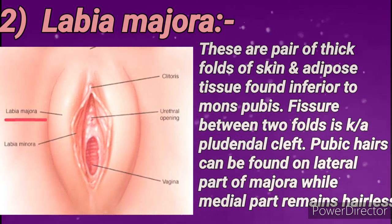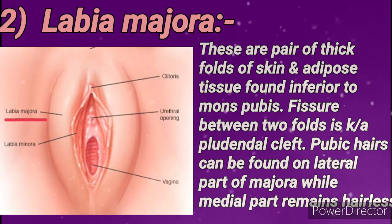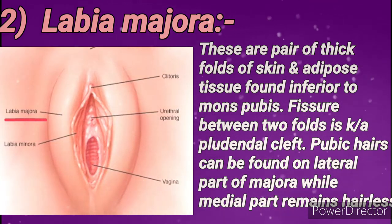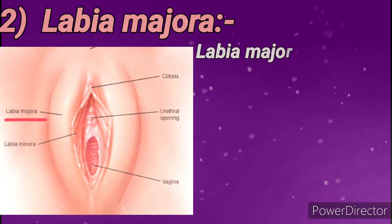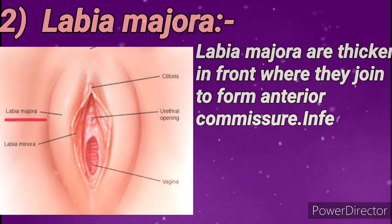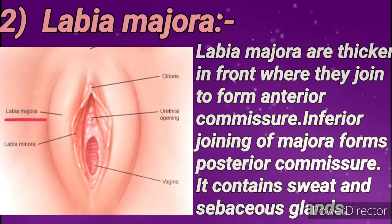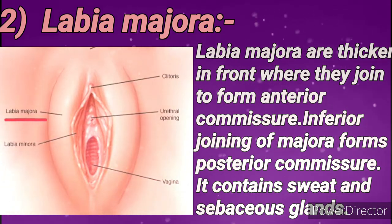Next is labia majora — thick folds of skin and adipose tissue located inferior to mons pubis. The fissure between these folds is known as the pudendal cleft. Labia majora also have pubic hairs on the lateral side, while the medial side remains hairless. The superior joining forms the anterior commissure and the inferior joining forms the posterior commissure. Labia majora have both sweat and sebaceous glands.